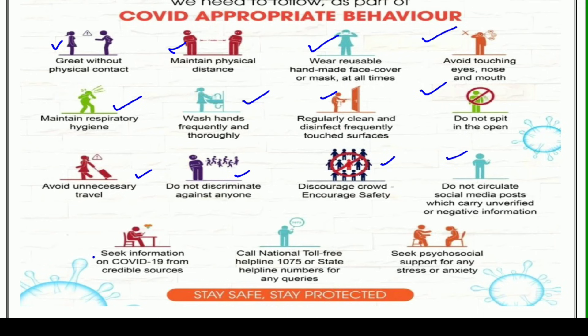Then next is: seek information on COVID-19 from credible sources. Yani agar aapko COVID-19 se sambandhit koi bhi suchna janni hai, uska pata lagana hai, toh jo vishwasniye srot hai usi se hi pata lagaiye. Aaltoo-faaltoo kisi se aise na puchhe jo aapko jaankari sahi na de. Then next is: call national toll free helpline 1075, or state helpline numbers for any queries. Yani ki 1075, jo ki national toll free helpline hai, us par call karein koi bhi jaankari praapt karne ke liye. Ya state helpline numbers par call karein, taaki aapki query — jo aapke prashna hain — unka samadhan ho sake.